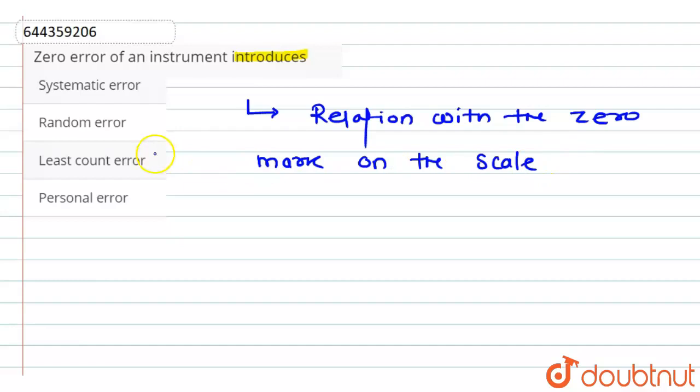So zero error can be recognized as a systematic error. So here, option A will be the correct answer for our question because systematic errors in experiments usually come from the instruments which are used for measuring.